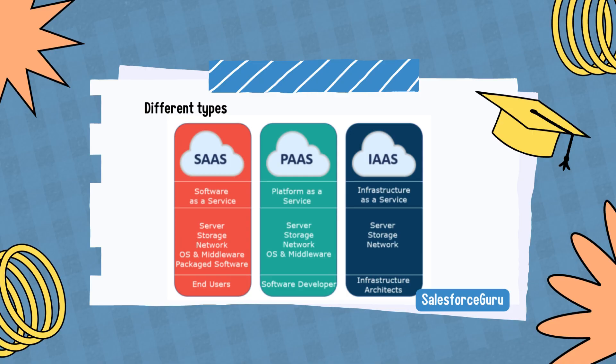Platform as a Service, PaaS, is considered the most complex of the three layers of cloud-based computing. PaaS shares some similarities with SaaS, but instead of delivering software online, it is a platform for creating software delivered via the Internet. This model includes platforms like Salesforce.com and Heroku.